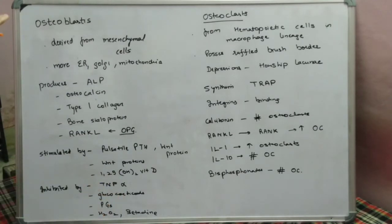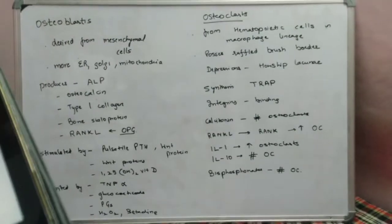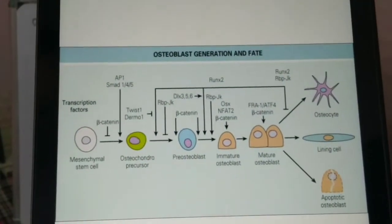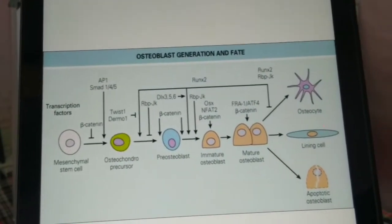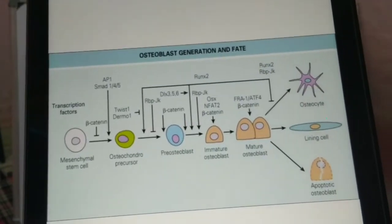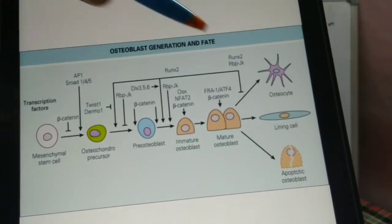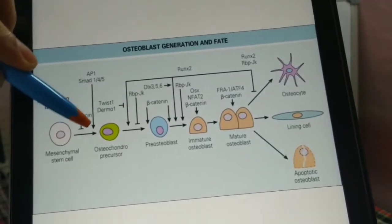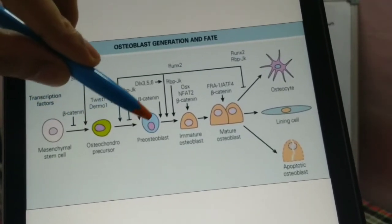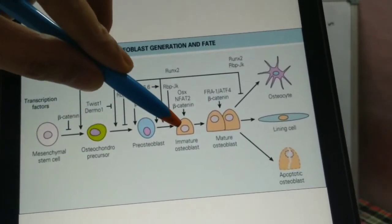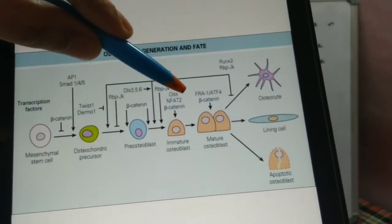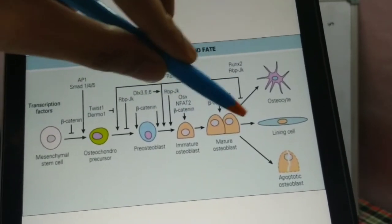Starting with the osteoblast, they are derived from the mesenchymal stem cells. Mesenchymal stem cells are the basic cells which can lead to the formation of any type of cell, but they are stimulated by various mediators to form the osteoprogenitor, pre-osteoblast, immature osteoblast, and finally the mature osteoblast.